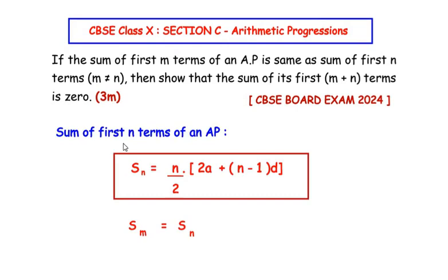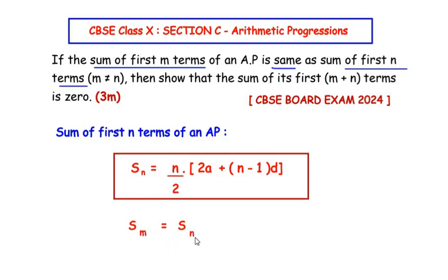The sum of first n terms of an AP formula is given as Sn equals n over 2 times 2A, where A represents the first term of the series, plus n minus 1 times D, where D represents the common difference. Now in the question they have given that the sum of first m terms is the same as the sum of first n terms, so we write Sm equals Sn.